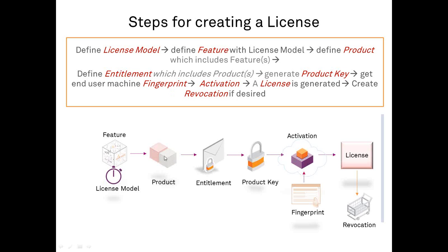Then I create a product. A product is similar to what I'm offering my customers. For instance, I have one product called Excel, which will have a feature inside it — feature two — representing working with Excel for, let's say, one year. But I can have another product called Excel Perpetual, meaning you get Excel not just for one year but for a lifetime, forever. That product will also use feature two for Excel, but in the product it will be defined that the license is forever and never expires.